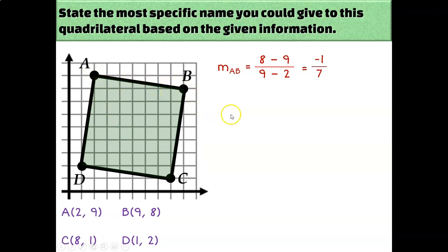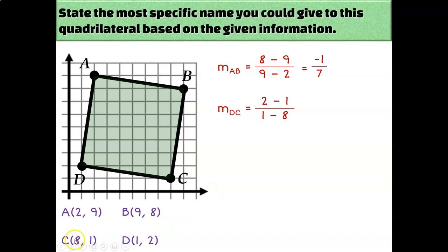Let's calculate the slopes of the other three lines as well. The slope of DC: (y₂ − y₁)/(x₂ − x₁) = (2 − 1)/(1 − 8), which gives me −1/7 again. So these two lines are parallel.